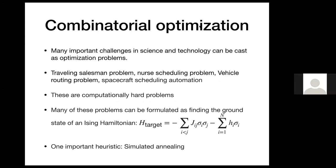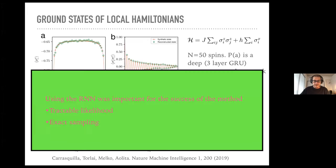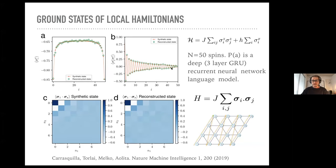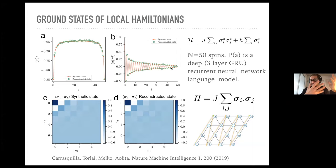Question from Robertson: how does the measurement M_a come in for the ground states of Hamiltonians? We imagine preparing the ground state of the Hamiltonian in a device, measuring the device or quantum state, collecting the statistics, and then reconstructing the quantum state. We use the measurement outcomes of those measurement operators M to train the RNN model in these examples.